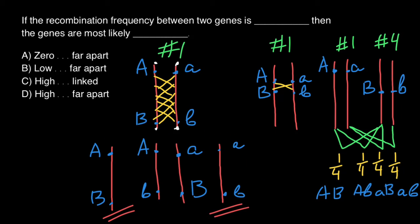So now let's check our answer variants. One more time: if the recombination frequency between two genes is blank space, then the genes are most likely blank. If recombination frequency is zero, that means genes are so close together that no recombination happens between them. The next variant says if recombination frequency is low, that means they are far apart — actually not. If recombination frequency is low, that means genes are very close. So that is not true.